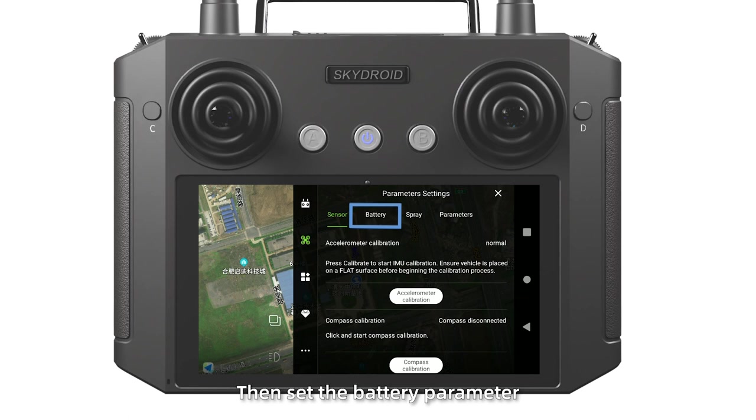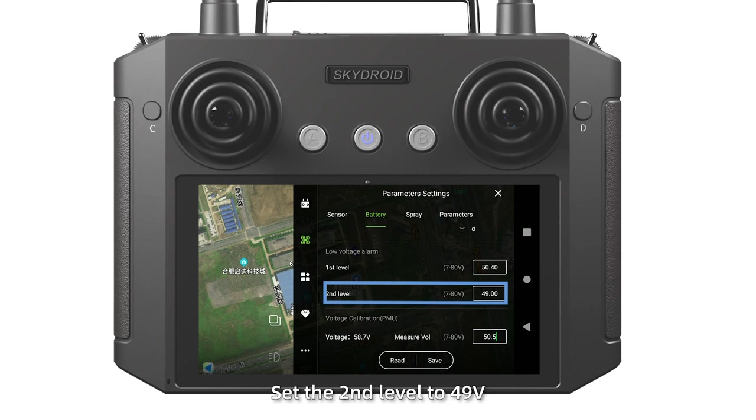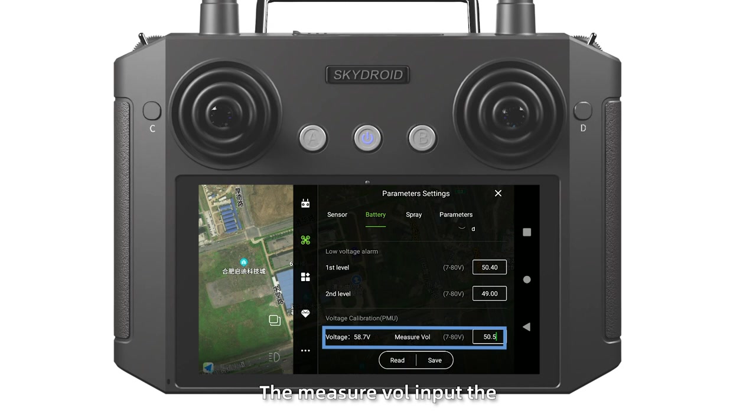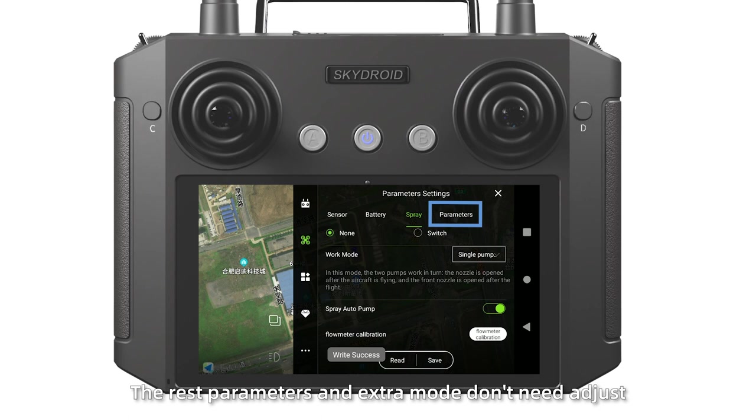Select H1 for low voltage protection. Set the first level to 50.4 voltage, set the second level to 49 voltage. The mirror VOL inputs the actual voltage previously measured 50.5 voltage. Then spray setting. Set the lift protection to 1. Set work mode and signal pump and save it. The rest parameters and extra mode do not need adjust.